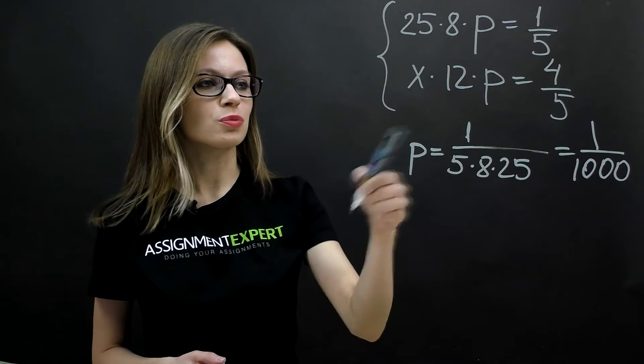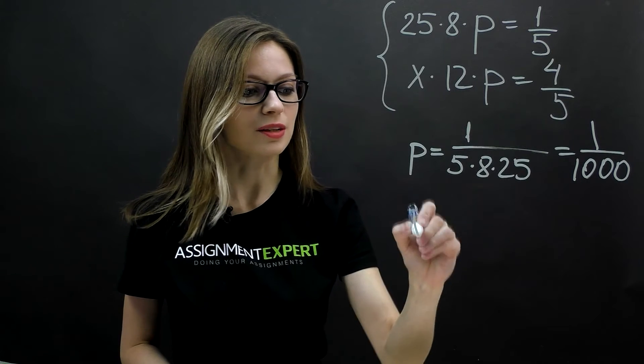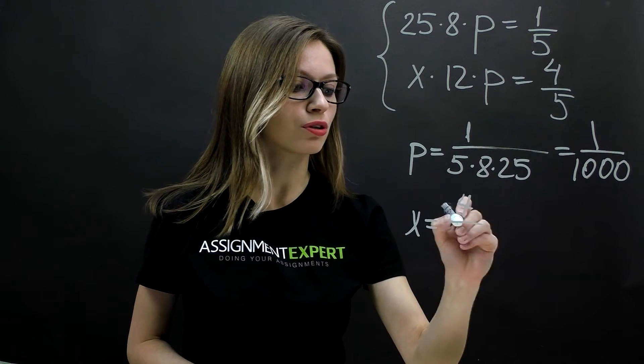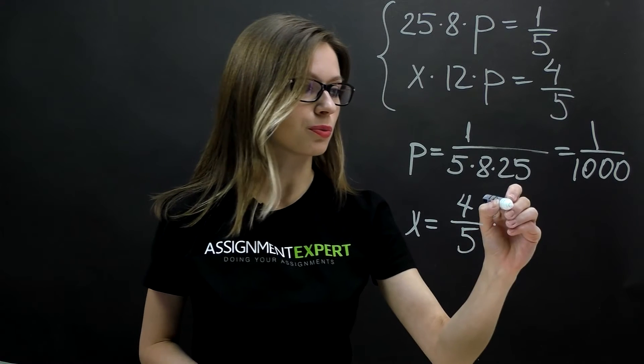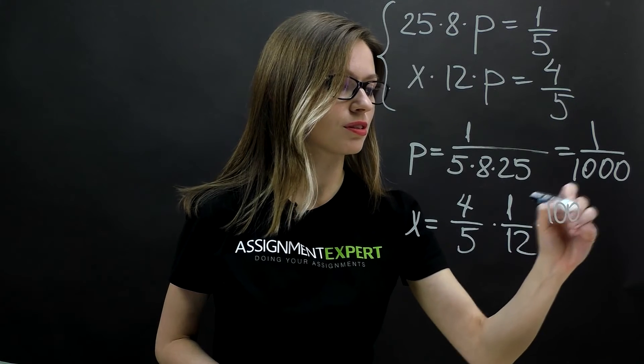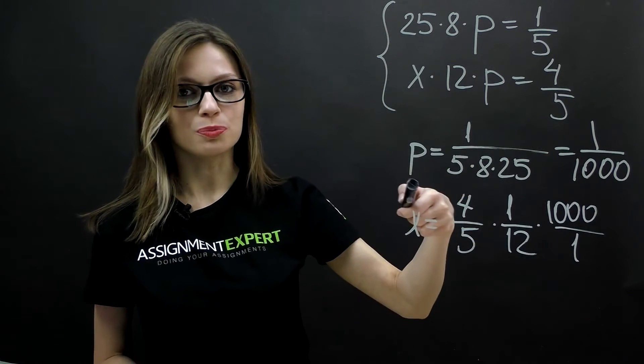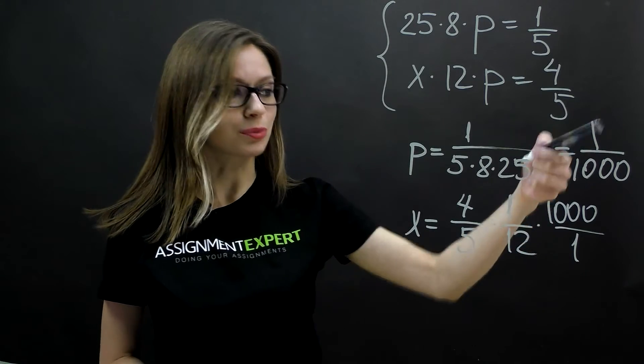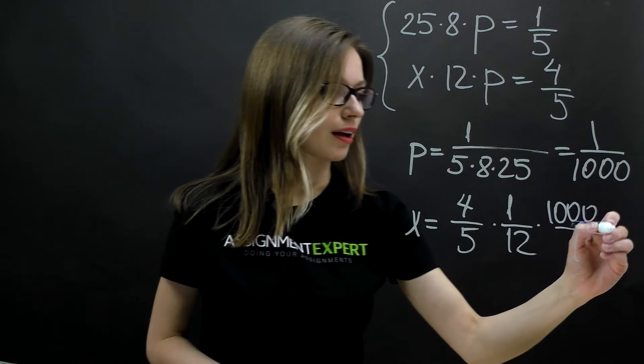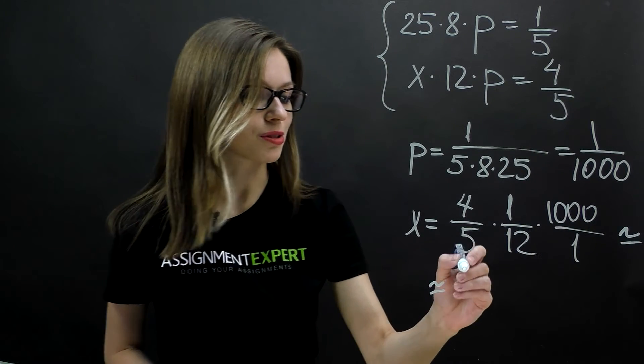Then we substitute p into our second equation, out of which we derive x, the number of workers that should be involved. And that is equal to 4 over 5 times 1 over 12 times 1000 over 1. So we multiply it by 1 over p. And this is actually approximately equal to 67.